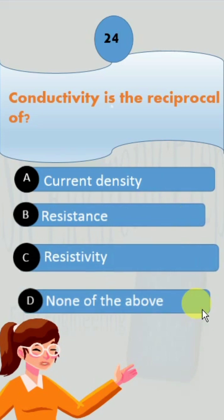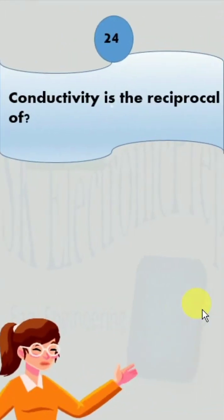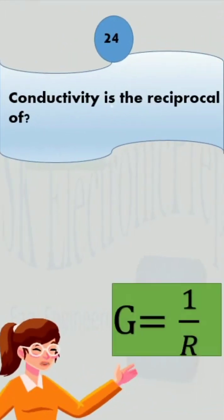First of all, let us understand the relation between resistance and conductance. Conductance is the reciprocal of resistance. Resistance is opposition to current flow.